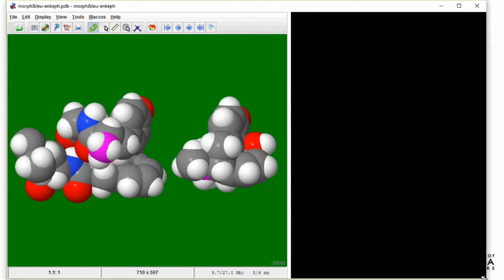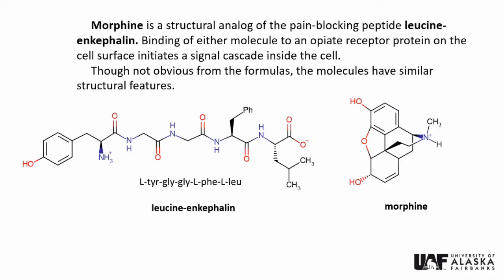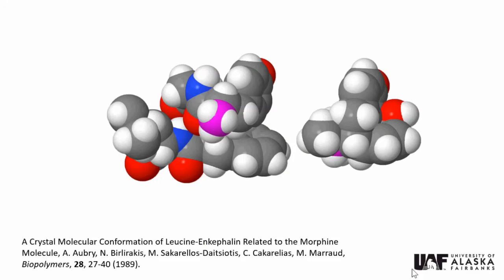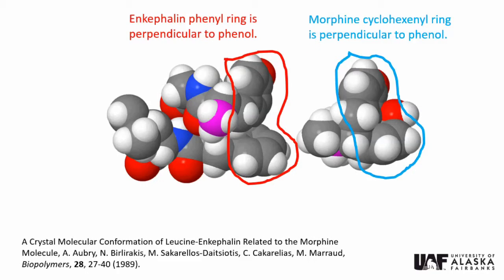In PowerPoint, we will go to the last slide, which shows a static image and offers more explanation. In enkephalin, the phenylalanine phenyl group is situated below and perpendicular to the phenol ring. In morphine, it is the cyclohexenol ring that is below and perpendicular to the phenol ring. Also, both molecules contain a positively charged ammonium nitrogen near one edge. The enkephalin structure was determined by Aubrey et al., who pointed out the similarity to morphine.